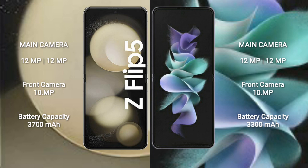Samsung Galaxy Z Flip 5 has a rear dual-camera setup: 12MP plus 12MP, and a front camera of 10MP. Samsung Galaxy Z Flip 3 also has a rear dual-camera setup: 12MP plus 12MP, and a front camera of 10MP.